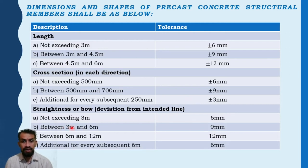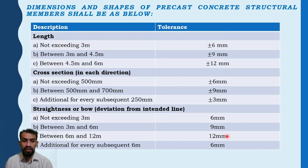For straightness or bow — deviation from the intended line: not exceeding 3 meters — 6 mm; between 3 meters and 6 meters — 9 mm; between 6 meters and 12 meters — 12 mm; and for each subsequent 6 meters — 6 mm tolerance.